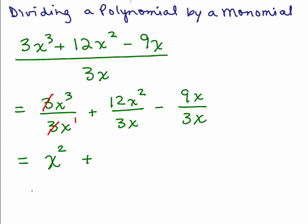On to the second term: the 3's cancel and we have x squared over x, so that's going to give us 4x. Remember, x squared over x is x squared over x to the first power. And on to the third one, the 3 goes into the 9 and both x's cancel, so this is just going to be minus 3. And that's your answer.